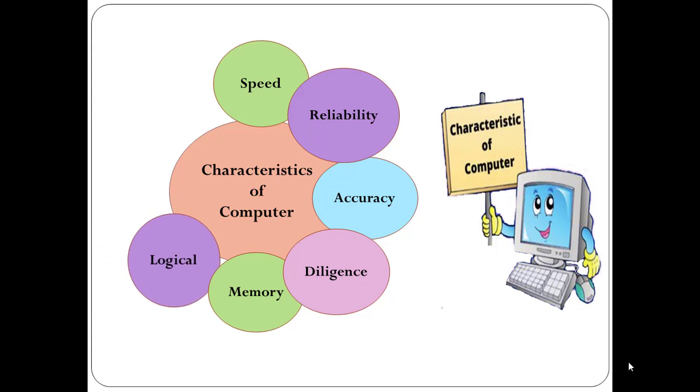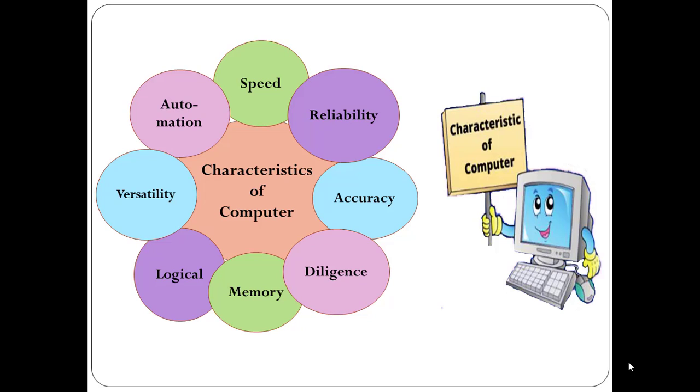The next property is logical property. Computer can perform all the operations logically by using arithmetic and logic unit. Next, versatility. Versatility refers to the capability of a computer to perform different kinds of works with similar accuracy and efficiency. And the last characteristic of computer is automation. Computer performs all the tasks automatically, that is, it performs tasks without manual intervention.